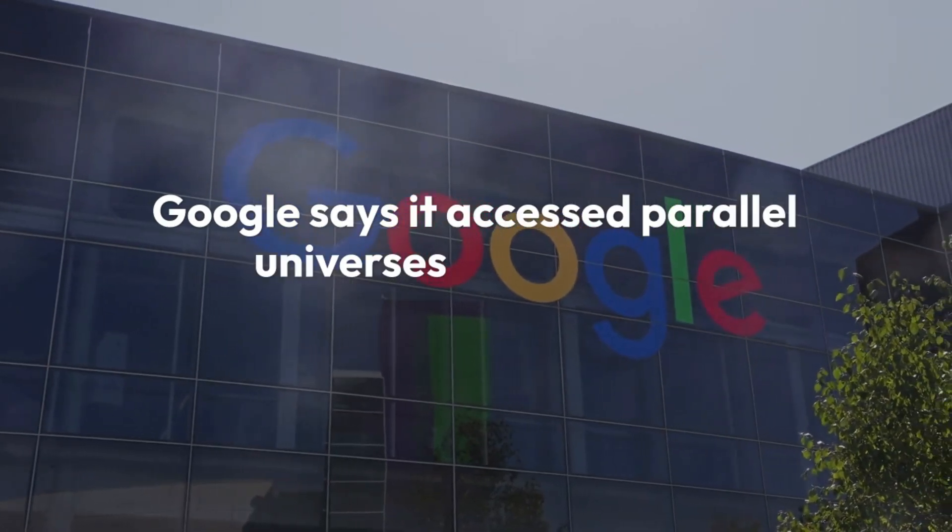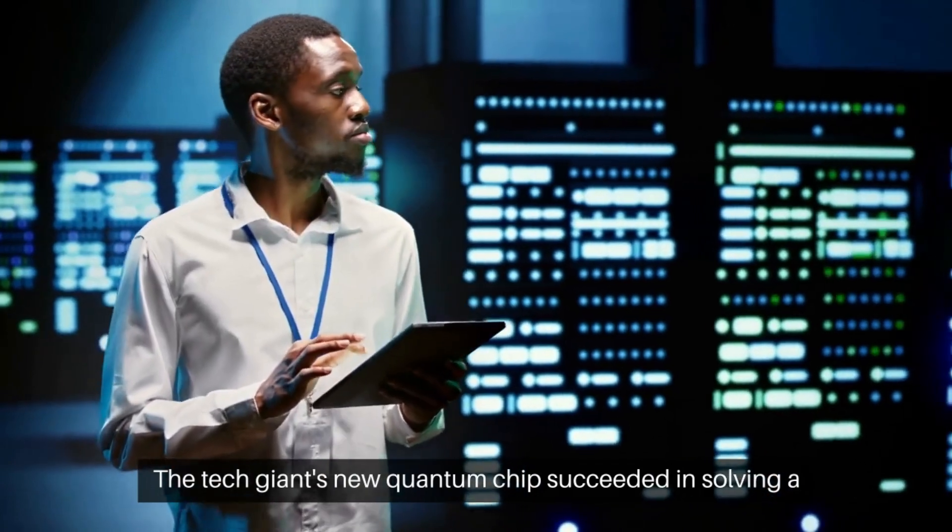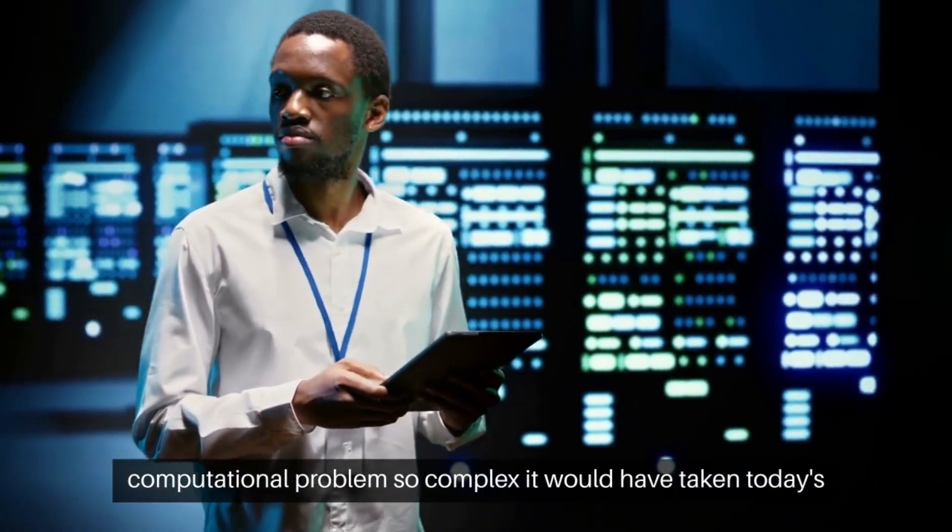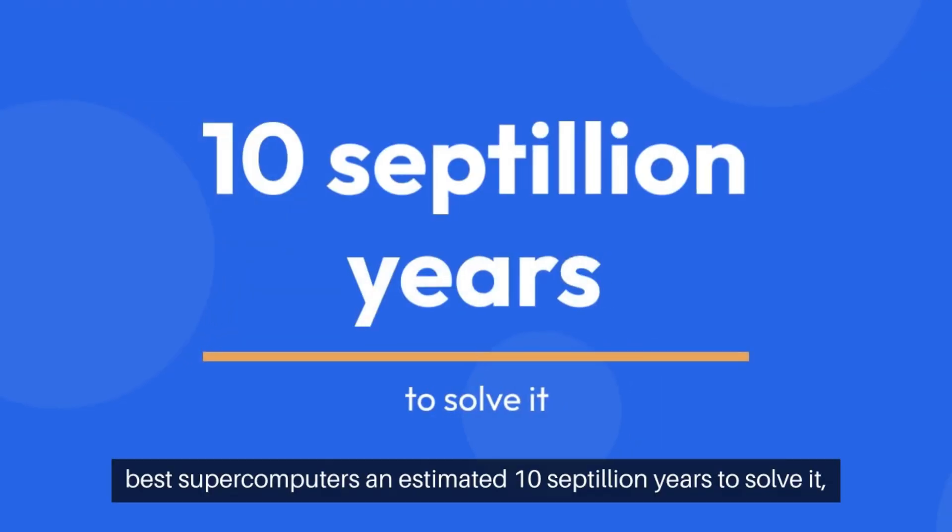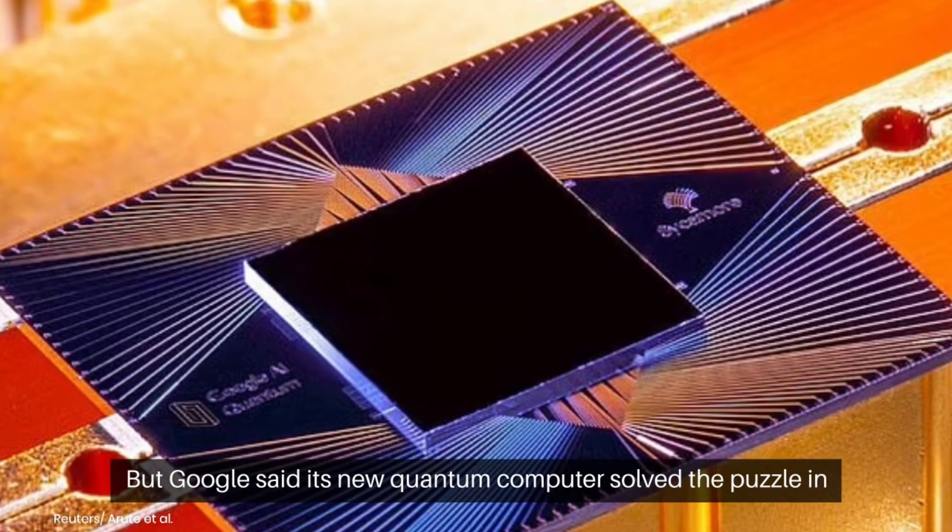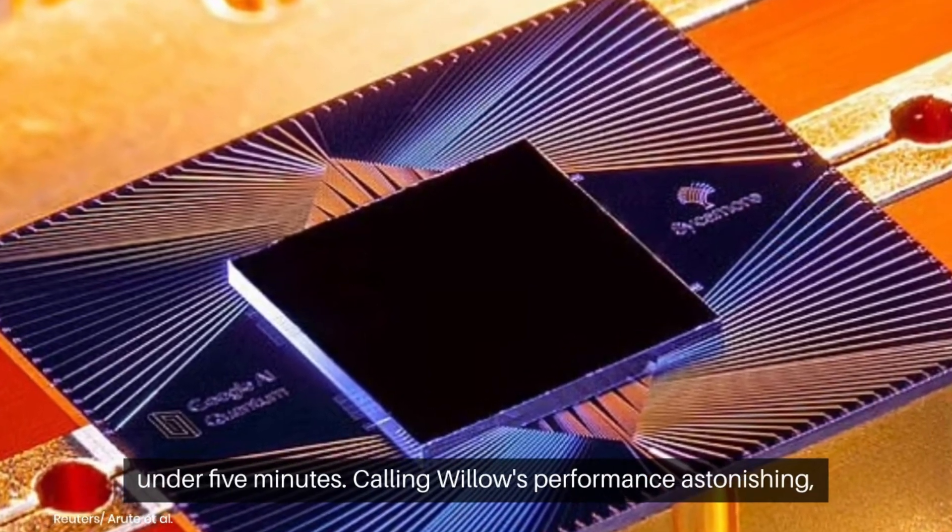Google says it accessed parallel universes with its new supercomputer Willow, the tech giant's new quantum chip. It succeeded in solving a computational problem so complex it would have taken today's best supercomputers an estimated 10 septillion years to solve it, vastly more than the age of our entire universe. But Google said its new quantum computer solved the puzzle in under five minutes.